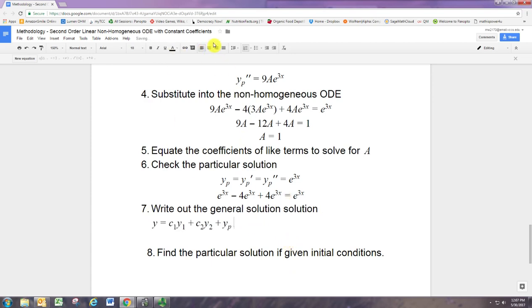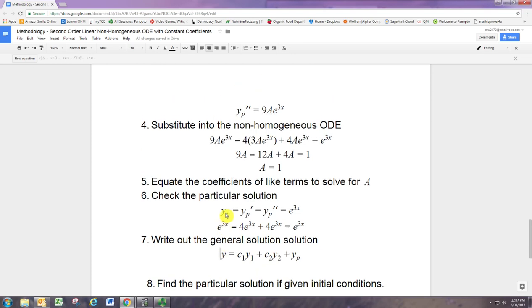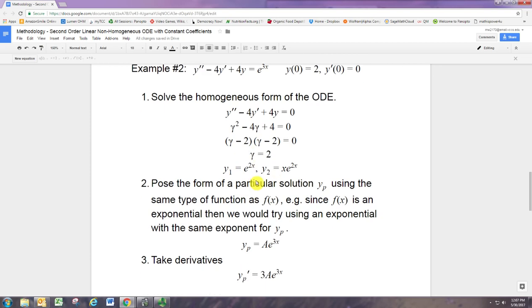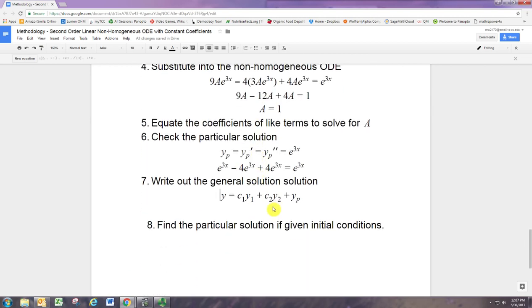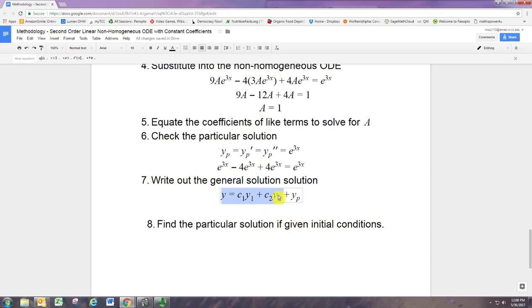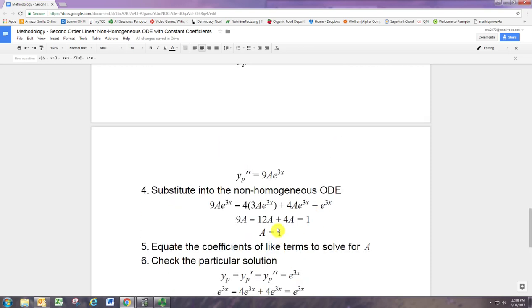And so if you were to put in e to the 3x here, should actually check out. Because the negative 4 and positive 4 will add to 0. And that just leaves that last e to the 3x there. So that checks out. We can now write out our general solution. And when you're doing the practice, you're going to find that a lot of these problems do not ask for the general solution. They actually just ask for the particular solution. So you may not have to do this whole methodology. You know, you could stop right at step 6. And you can even skip the first step, step 1. Okay, so we know that y1 from earlier is e to the 2x. And we know y2 is x e to the 2x. And we know the particular solution is e to the 3x.